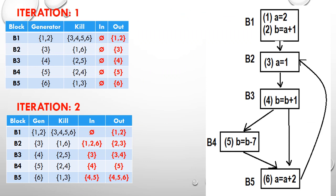These are the new values of input and output in iteration 2. Comparing iteration 1 and iteration 2 matrices, the red marked values for in and out are different since generate and kill do not change. The input and output values are different between iterations 1 and 2, which means we have to perform these operations again to find the new input and output values.